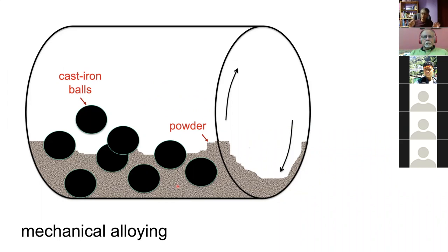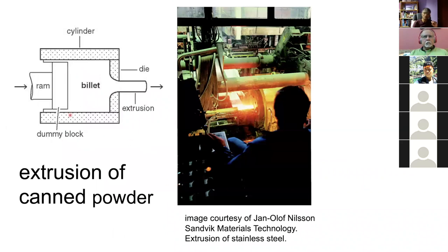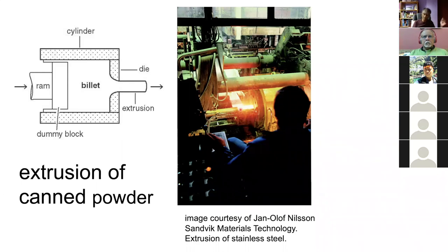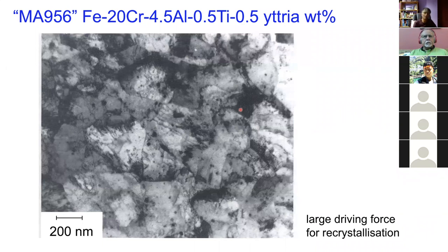The yttrium oxide won't go into solution, but the rest of the material will. After making the powder, you put it into a mild steel can and extrude it hot to consolidate it into a solid object, achieving almost 100% density. In the case of this particular alloy — which has large amounts of chromium and aluminium for oxidation resistance, plus titanium, and yttrium in the form of oxides — this is the structure left after mechanical alloying.